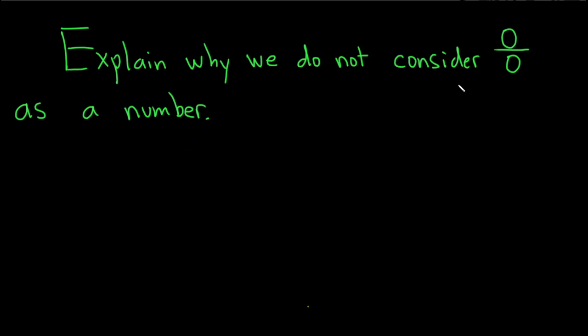Let's explain why we do not consider 0 over 0 as a number. We are taught that this is considered undefined, and let's try to explain why that is the case.